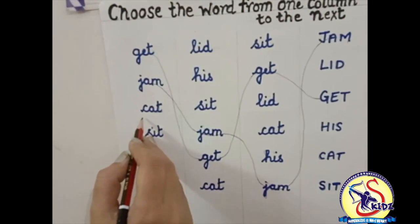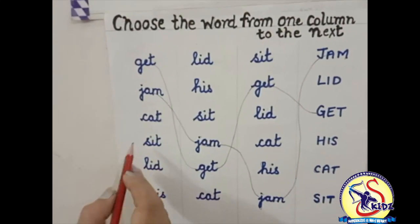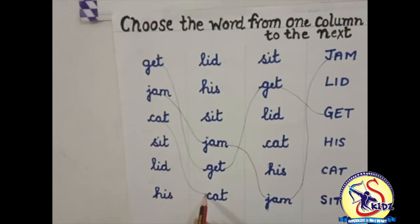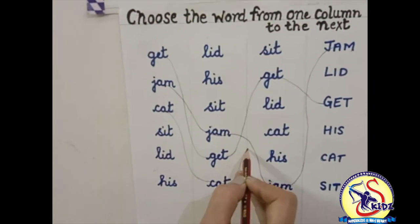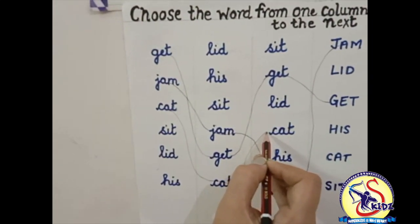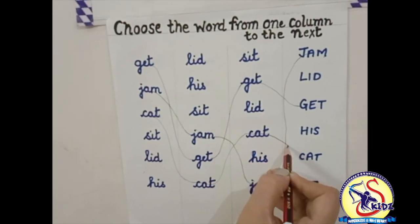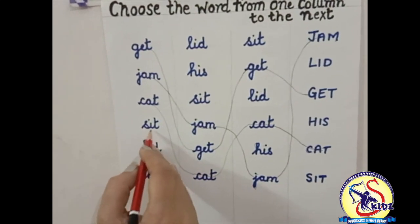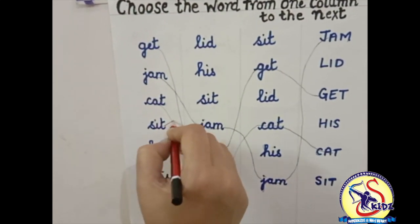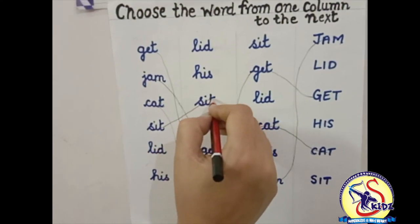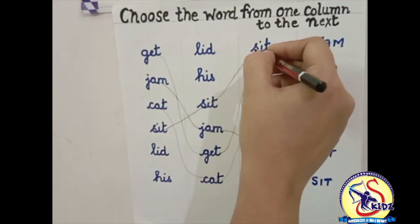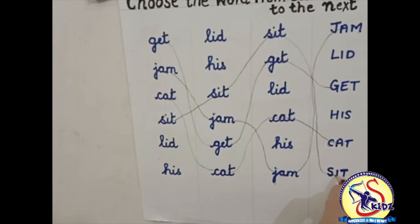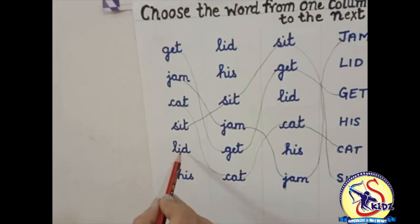Now our next word is C-A-T, cat. Yes, this is the word cat — now move to the next line. Cat is written here. Move to the next line. Our next word is sit — let's match it with the word sit. Move to the next line. And yes, this is the word sit.